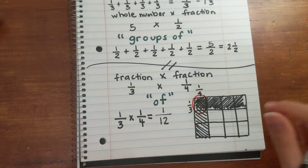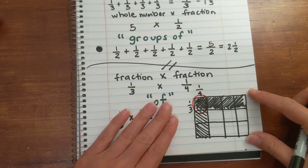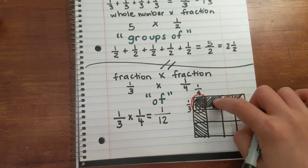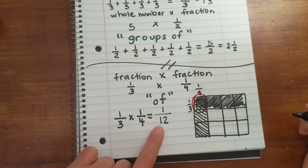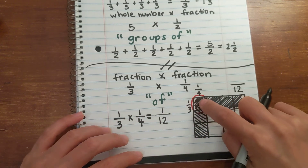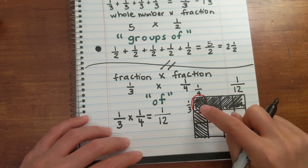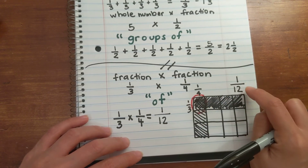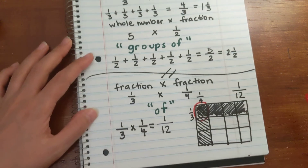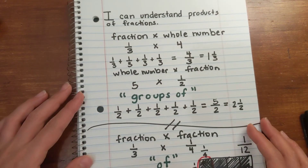So it's a third of a fourth, or a fourth of a third. Count how many total parts there are: one, two, three, four, five, six, seven, eight, nine, ten, eleven, twelve — that's your denominator. Then the one intersecting point between the two fractions is right here — there's only one box, so my numerator is one. A third of a fourth, or a fourth of a third, is one-twelfth.